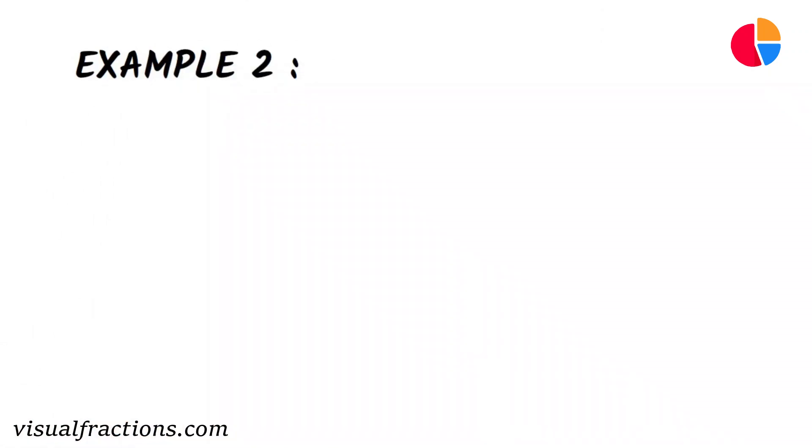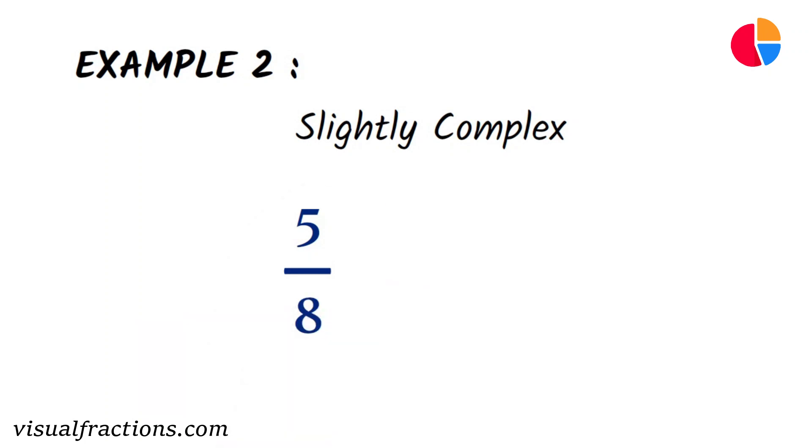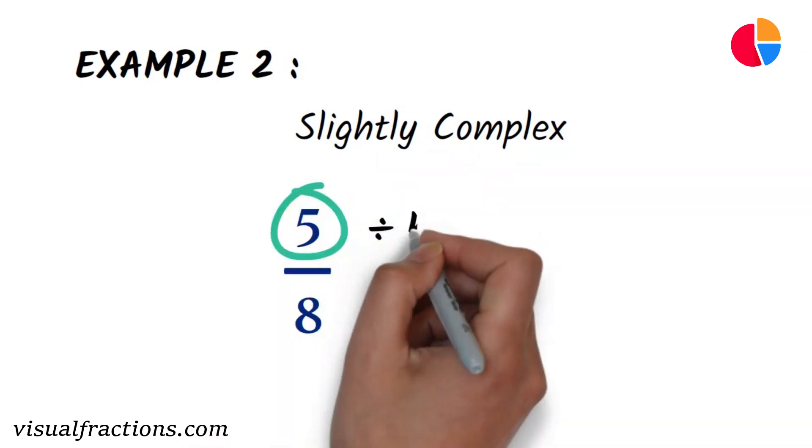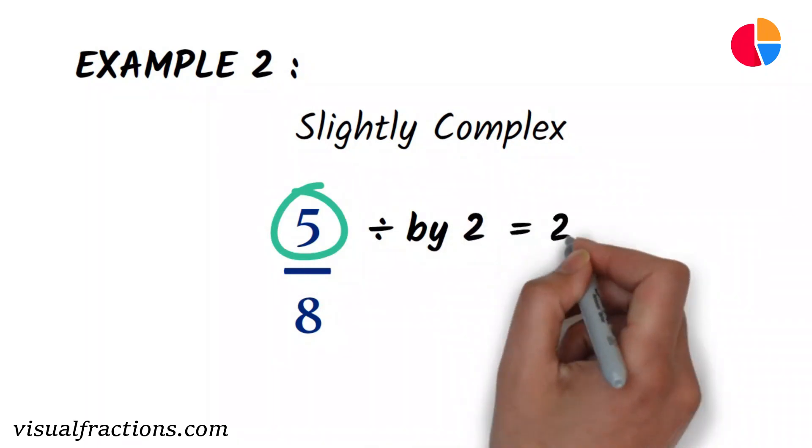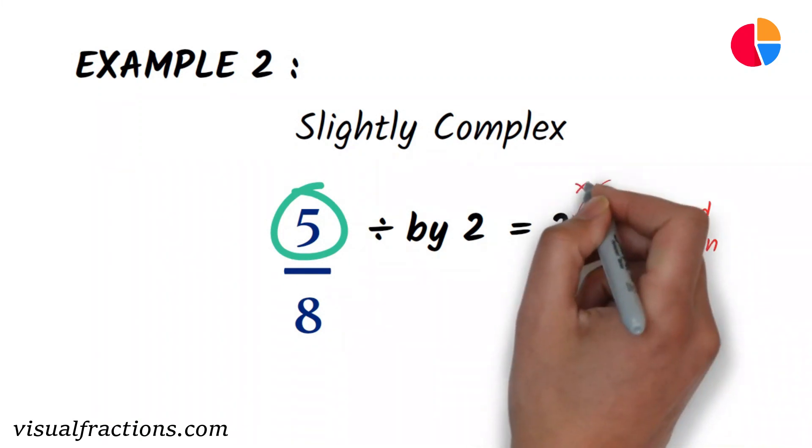Example 2: Now let's try a slightly more complex example. Let's find half of the fraction 5 eighths. To do this, we divide the numerator, 5, by 2, which gives us 2.5. However, we need our answer to be a fraction, not a decimal.